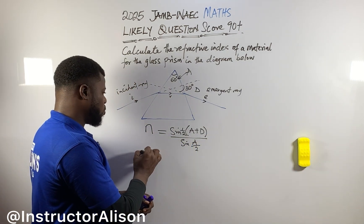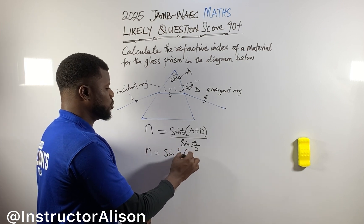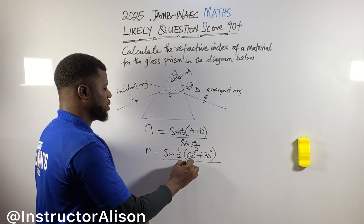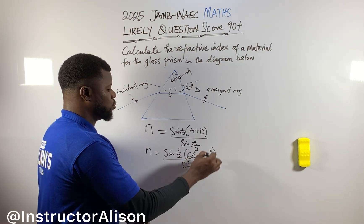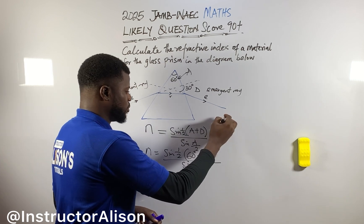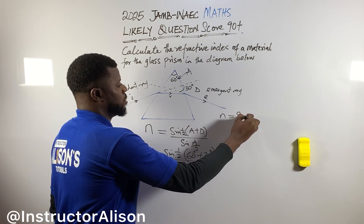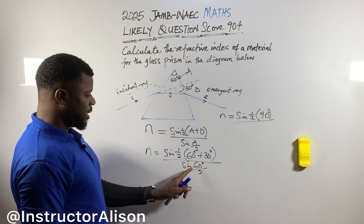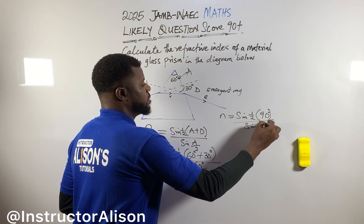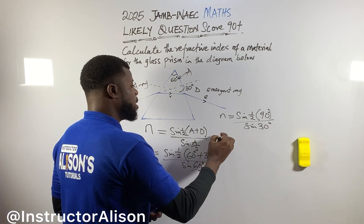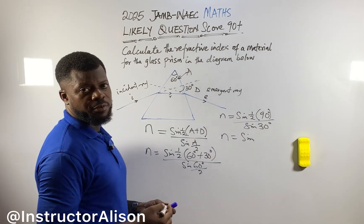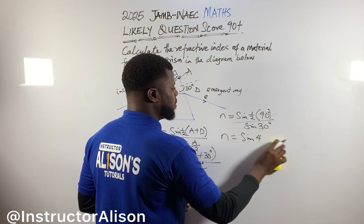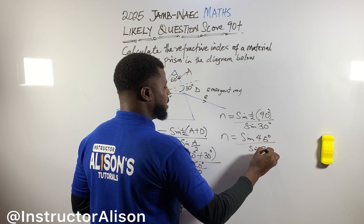So wait, let me give you the formula. N will be equal to: sine of one-half times (A plus D), all over sine of A over 2. Or if you write it like this for the textbook: sine of (A plus D) over 2, all over sine of A over 2. A - you get the value; D - you get the value. Now N will be equal to sine of one-half into - A is 60 degrees plus D, which is 30 degrees - over sine of 60 degrees over 2.